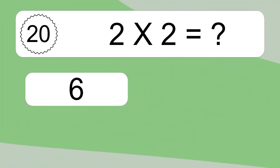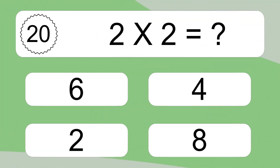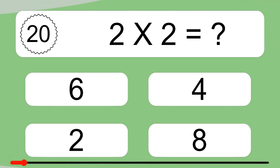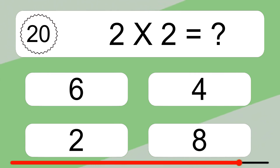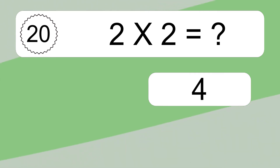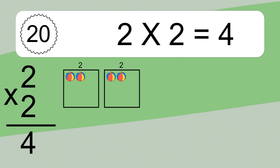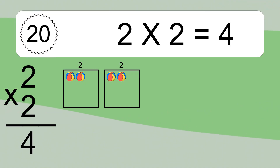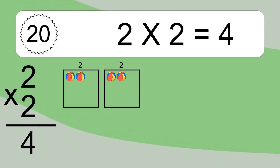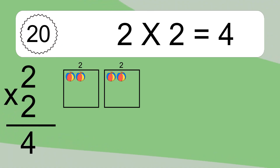2 times 2 equals what? 2 times 2 equals 4. We have 2 boxes, and each box has 2 colorful balls inside. If you count all the balls in all the boxes together, you will have 2 times 2 balls. This equals 4 balls.